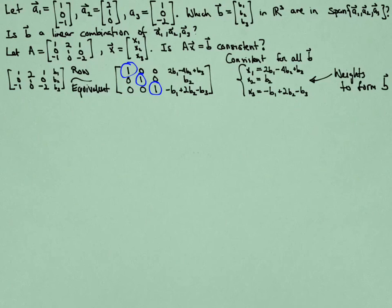Remember, those values of X are telling you how to determine the weights of the linear combination that will be required to form your vector B.